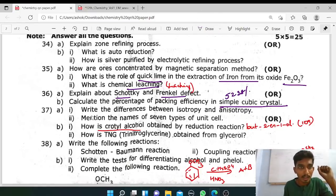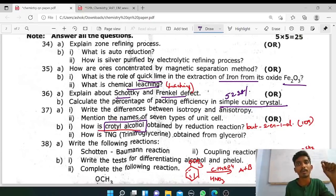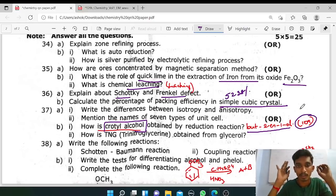Write the differences between isotropy and anisotropy. Write the names of the seven types of unit cells: cubic, tetragonal, orthorhombic, monoclinic. Let's look at one more question. Preparation of alcohol, reduction of carbonyl compounds. Crotyl alcohol, beauty 2-in-1-ol, page number 109. Preparation of alcohol, last heading, reduction of carbonyl compounds.